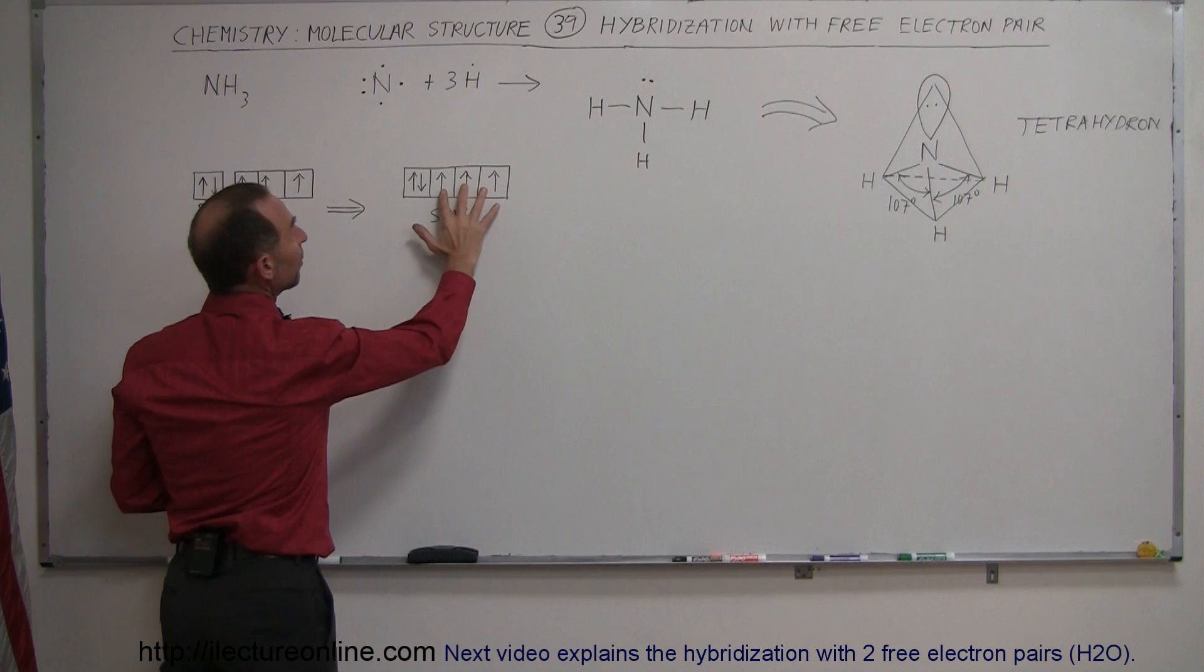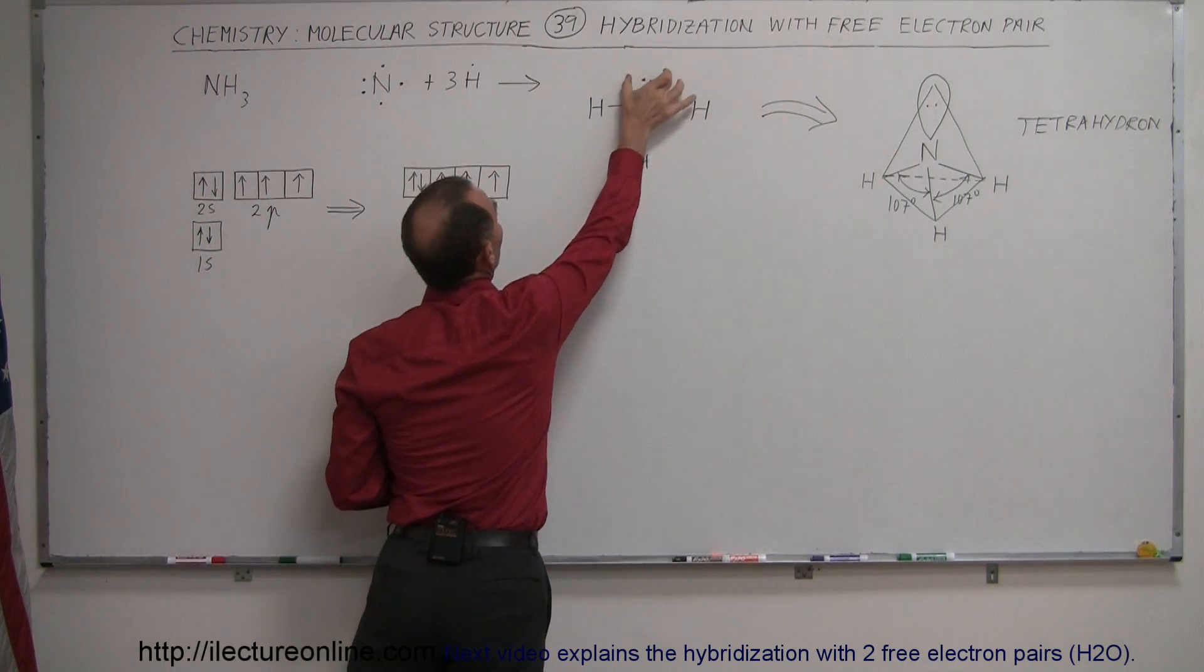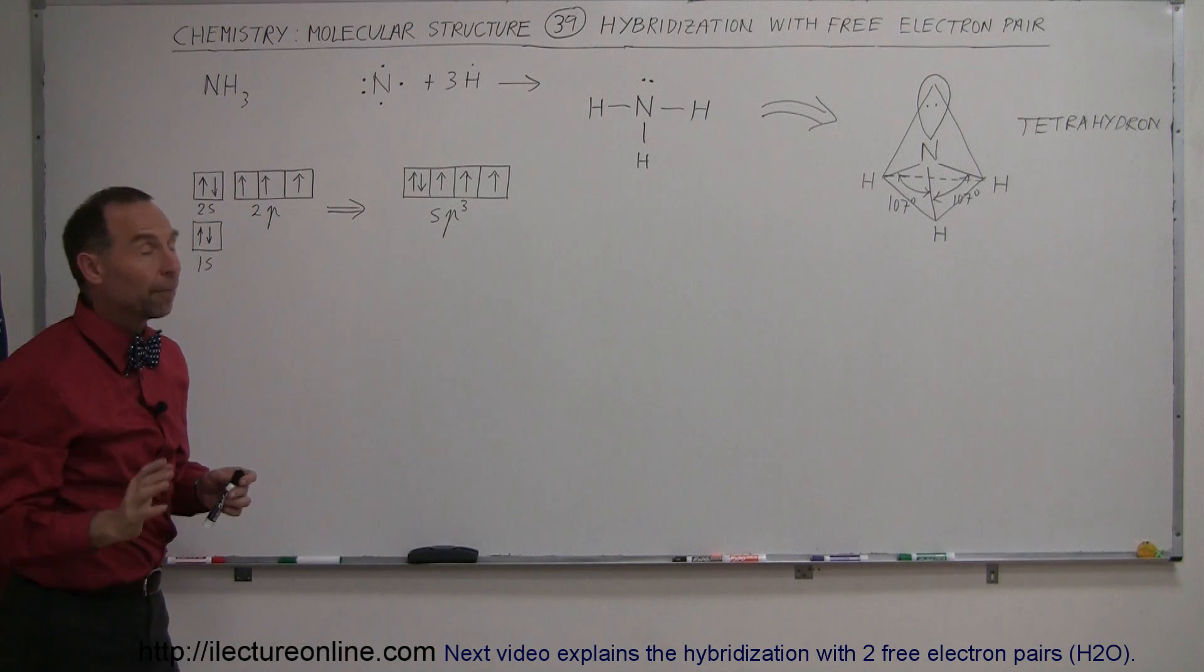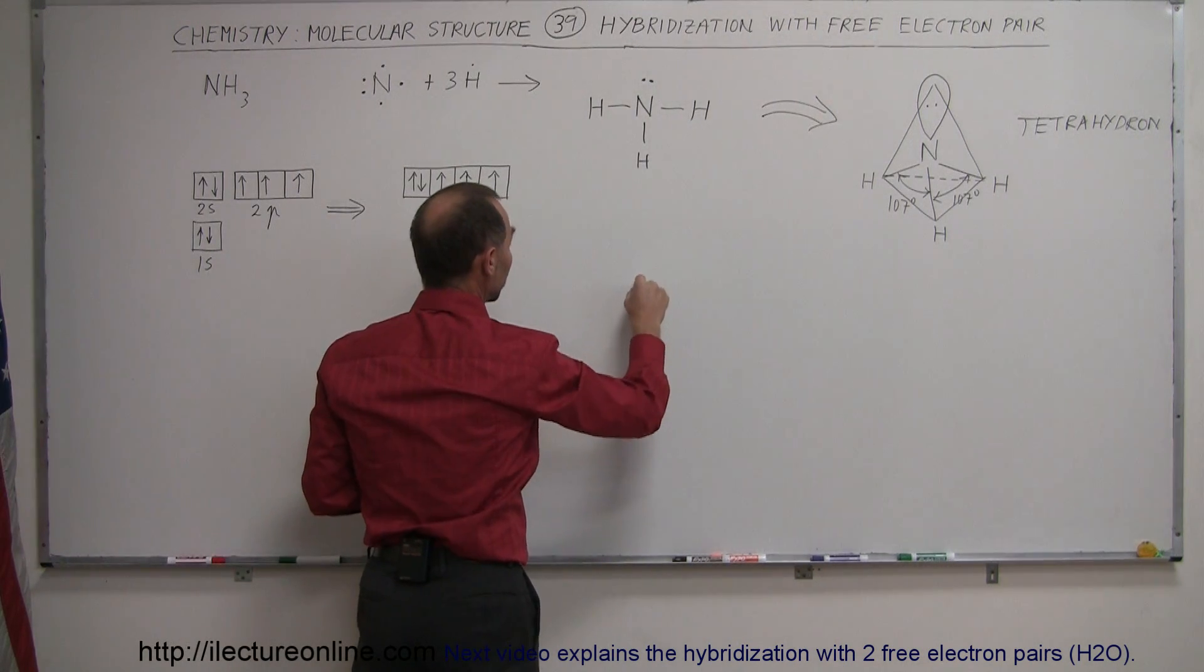That's why only these three will make a bond with the three hydrogens, and the last one is now occupied by the nitrogen. But nevertheless, this is what the bond structure will look like, or this is what the orbitals will look like.